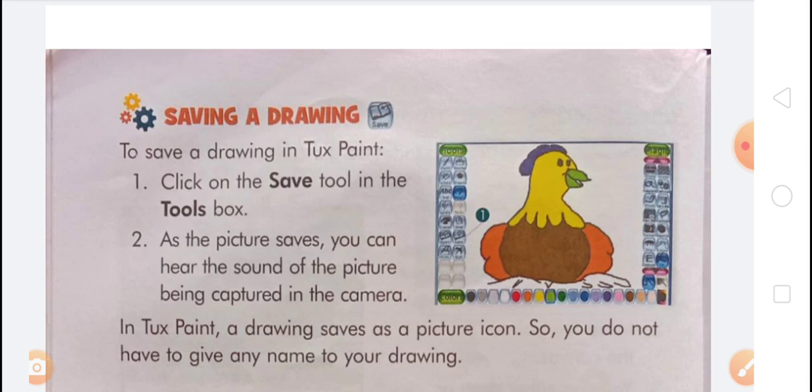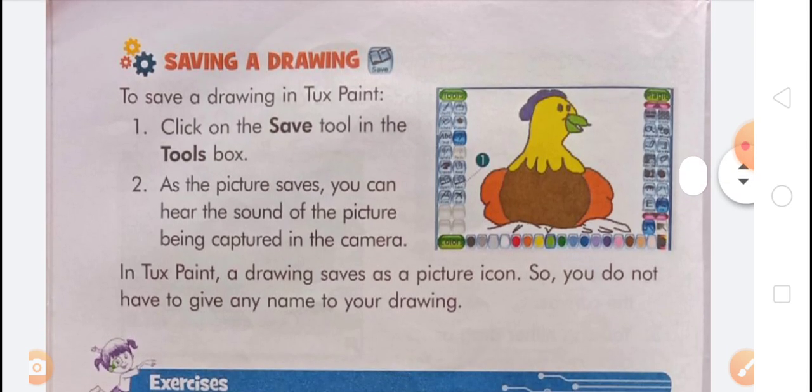You will see a pattern drawn on the canvas in place of the line. Now, how to save a drawing in TuxPaint: firstly, click on the Save tool in the tools box. As the picture saves, you can hear the sound of the picture being captured — like a camera click. TuxPaint saves your drawing as a picture icon, so you do not have to give any name to your drawing.